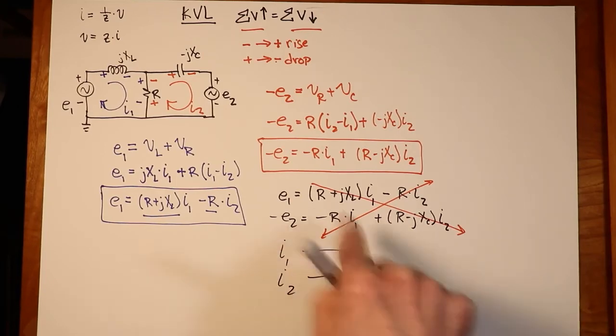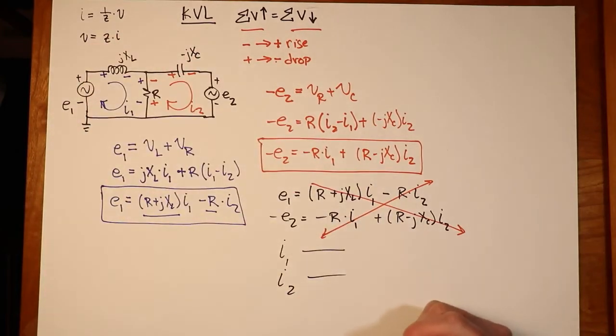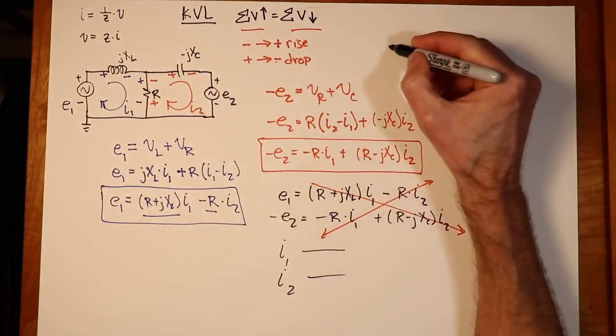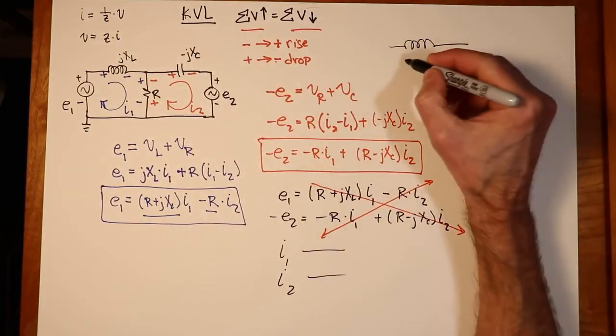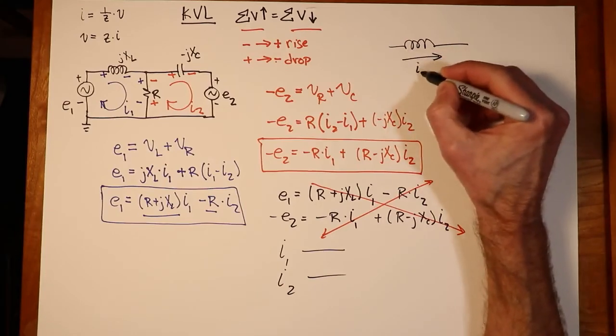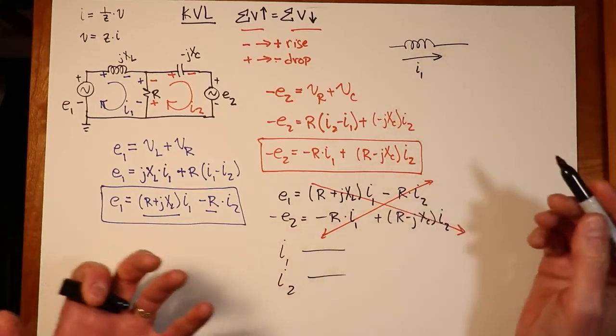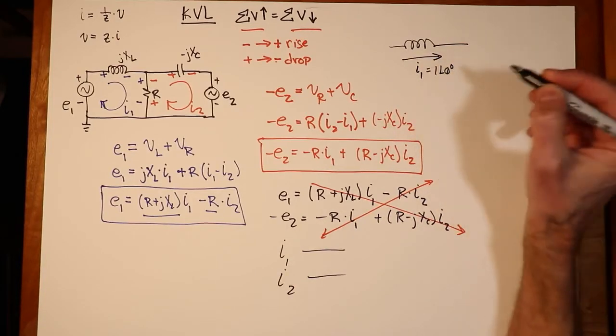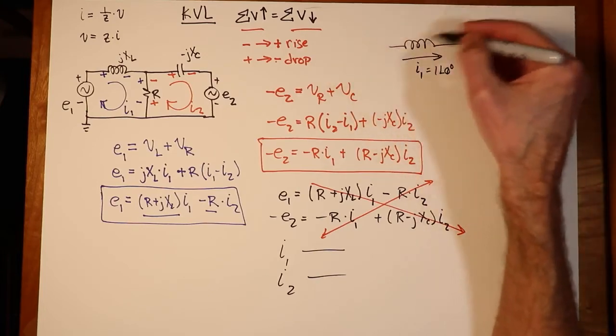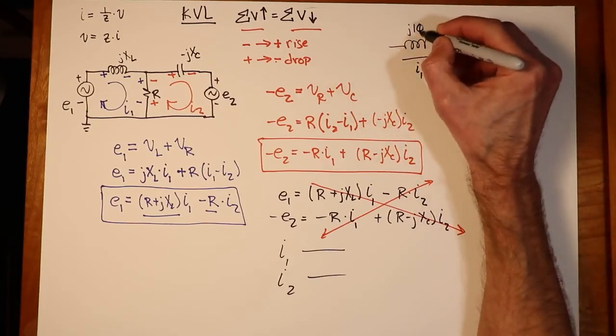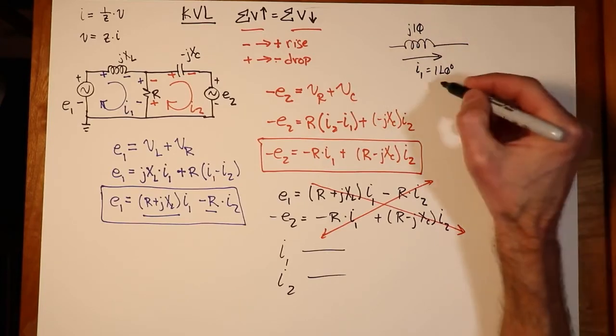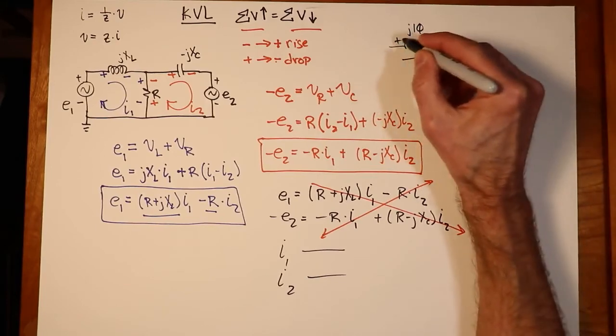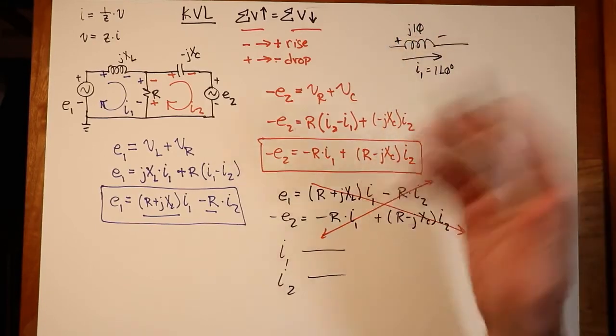Now I have to go back, given these currents, into the original circuit and determine what the voltages are on various components. In the case of the inductor, that's fairly straightforward because the only current flowing through here is I1. Just to use some round numbers, if I1 just happened to equal 1 at an angle of 0, and my inductive reactance was J10, that's 10 at an angle of 90 times the 1. I'm going to get 10 volts at an angle of 90, and that's what I would see across here with this reference polarity.